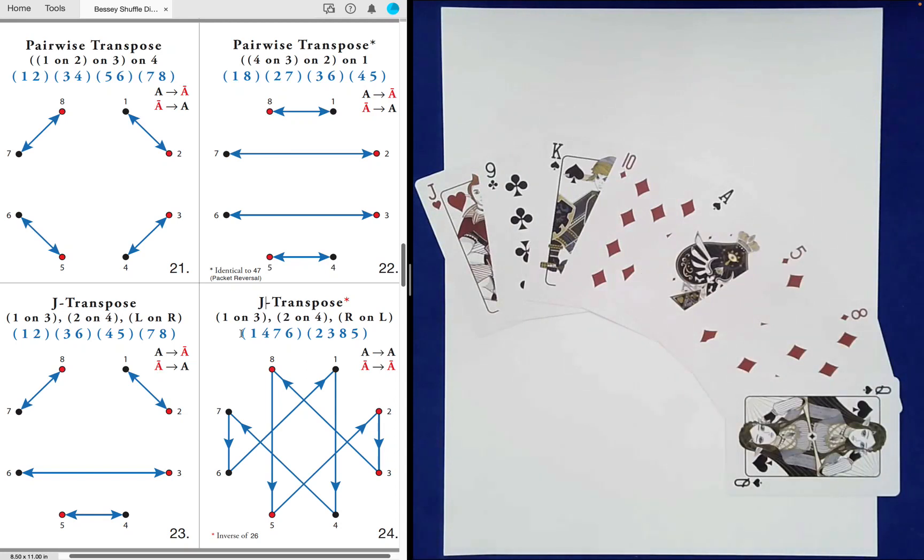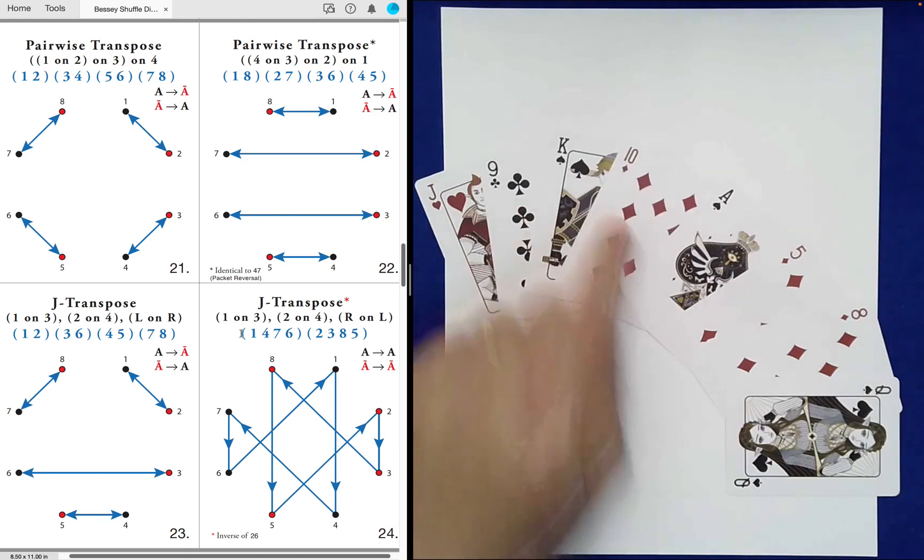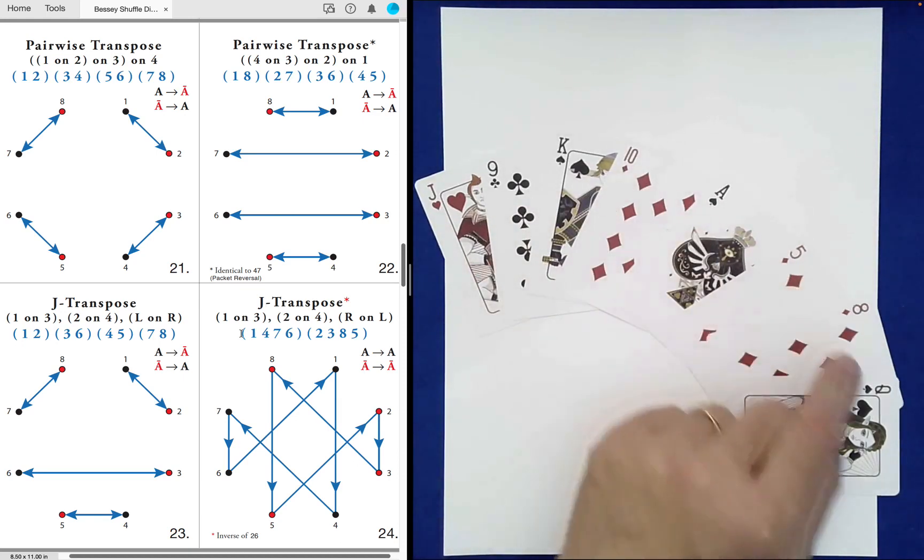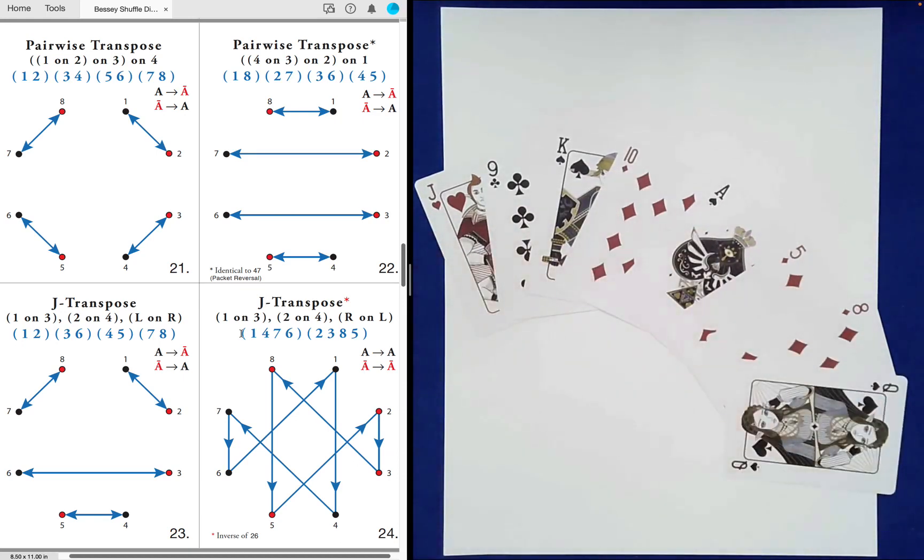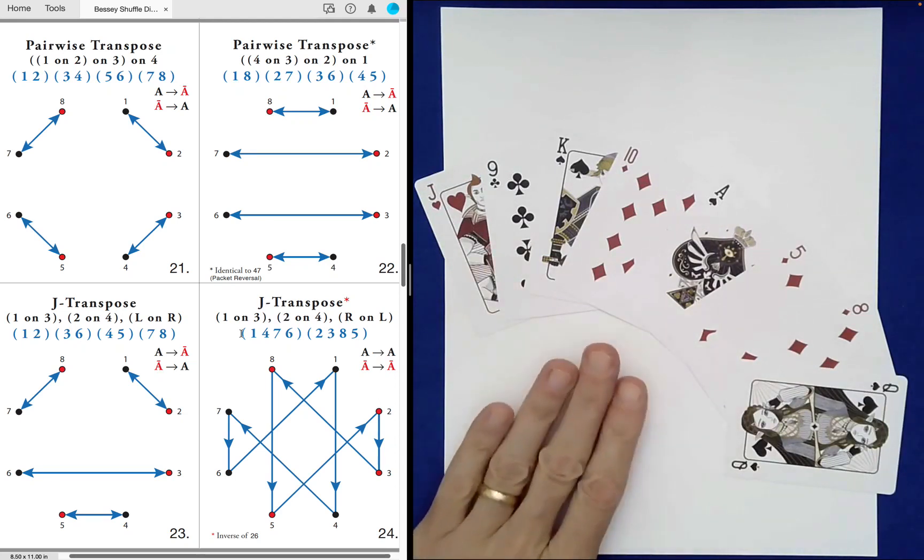So this would be one version of a Bessie sequence relative to card color. The other one that we could have done is black, red, red, black, red, black, black, red. That would be the inversion of this one relative to card color. So, this is where I began.